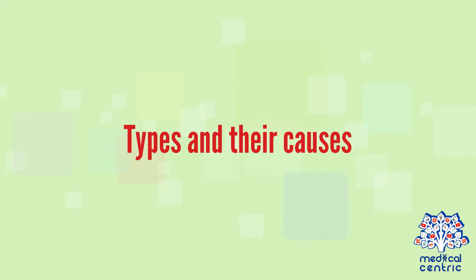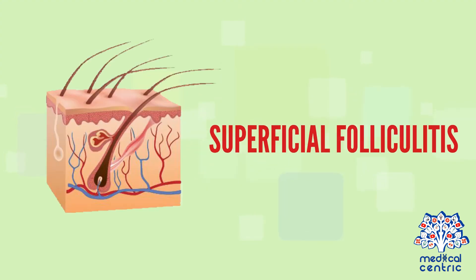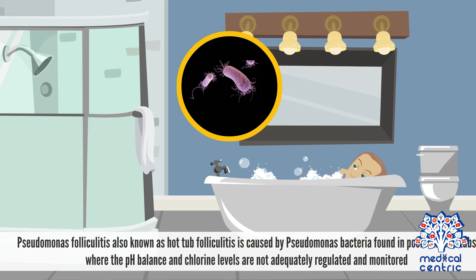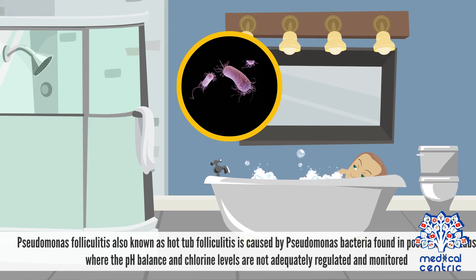Types and their causes. Superficial folliculitis. Pseudomonas folliculitis, also known as hot tub folliculitis, is caused by pseudomonas bacteria found in pools and hot tubs where the pH balance and chlorine levels are not adequately regulated and monitored.